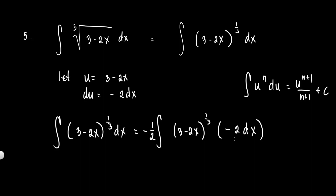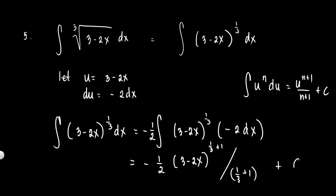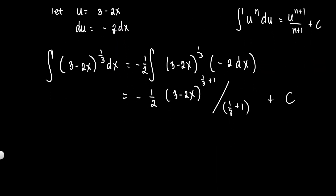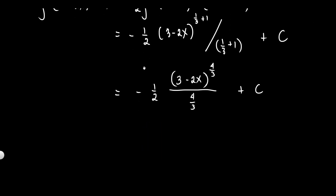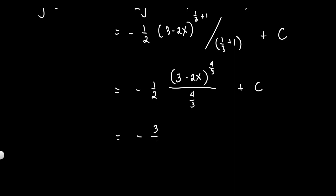Now applying the power formula: (-1/2) times (3 - 2x)^(1/3 + 1) over (1/3 + 1) plus C. Since 1/3 + 1 = 4/3, this becomes (-1/2) · (3 - 2x)^(4/3) / (4/3) + C. Dividing by 4/3 is multiplying by 3/4, giving (-1/2)(3/4) = -3/8. The final answer is -3/8 · (3 - 2x)^(4/3) + C.